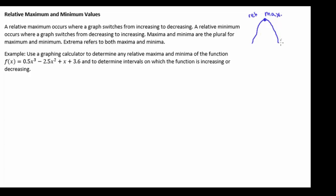Here, depending on if our graph goes back up, this may not be the absolute maximum but it is a relative maximum. A relative minimum occurs where a graph switches from decreasing to increasing.